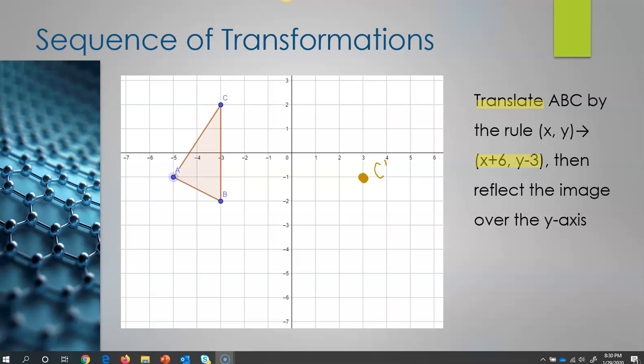That is going to be my point C prime. Now, I'm going to do the same thing with point B. So I'm going to go 1, 2, 3, 4, 5, 6. That's my right. Now down 3. 1, 2, 3. And I'm going to put my dot there. And that is going to be my B prime.